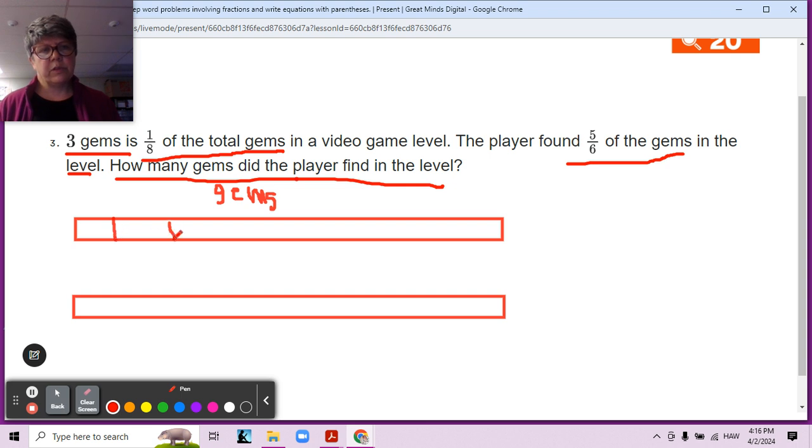One, two, three, four, five, six, seven lines makes eight parts, and we're just going to pretend they're equal. And three is one-eighth, right? This is one-eighth because it's one out of the eight. Okay? All right. So three is one-eighth of the total gems.